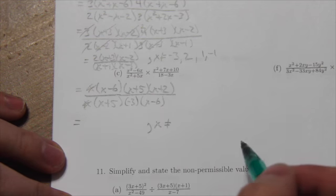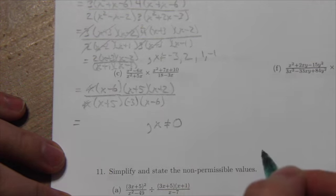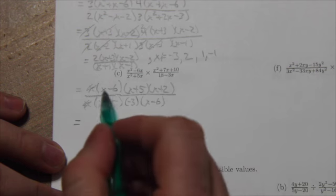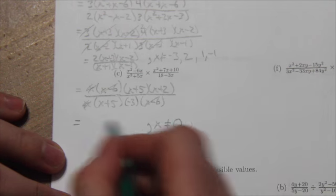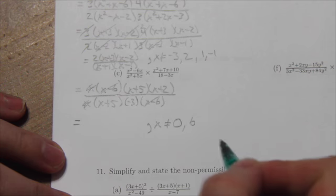So first of all, those common factors of x disappear so long as x is not allowed to equal 0. x minus 6 over x minus 6 will be 1 so long as x is not allowed to be 6.